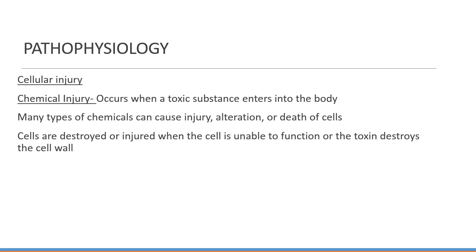Chemical injuries occur when a toxic substance enters the body. All kinds of chemicals can cause injury, alteration, and death of cells, and ultimately death of the organism. These can include common things like alcohol, drugs, carbon monoxide, as well as environmental toxins including insecticides and herbicides. When that kind of injury occurs, the toxins create a biochemical reaction with either the plasma membrane or one of its organelles. After damaging the cell wall, sodium, water, and calcium pour into the cell, and the damage continues the same way as a hypoxic injury.